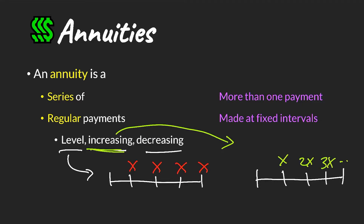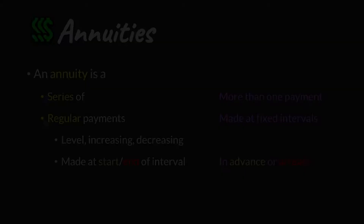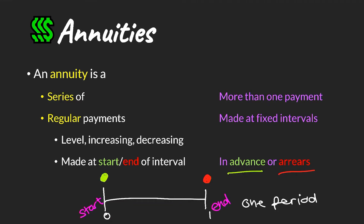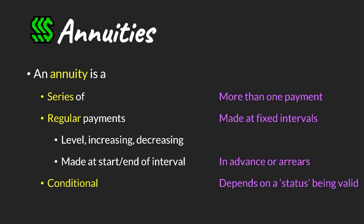While payments happen regularly, they can occur either at the start or at the end of each interval. If our period is one year, the payment can be made at the start of the year or at the end. Payments made at the start are called payments made in advance, and payments made at the end of the period are made in arrears. It's important to understand this distinction because it affects how we discount or accumulate our cash flows.